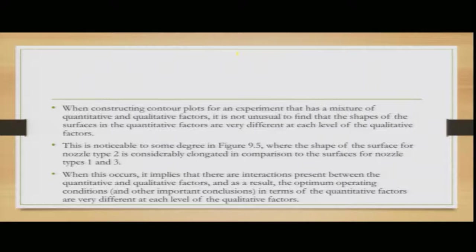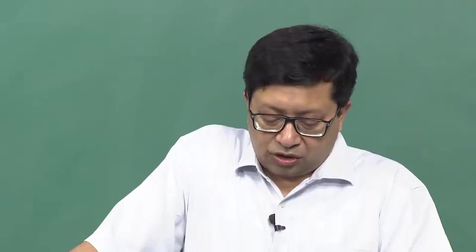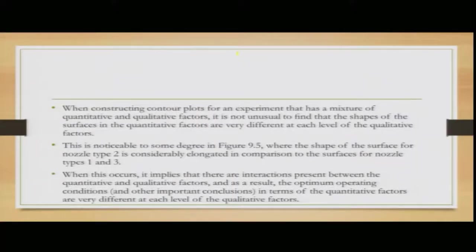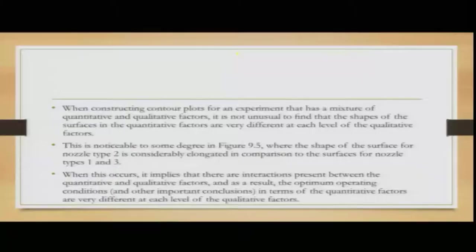When constructing contour plots for an experiment that is a mixture of quantitative and qualitative factors, it is not unusual to find that the shape of the surfaces for quantitative factors differs at each level of the qualitative factor. This is noticeable in the figure where the surface for nozzle type 2 is considerably more elongated compared to types 1 and 3. When this occurs, it implies interactions between quantitative and qualitative factors, meaning optimum operating conditions differ at each level of the qualitative factor.